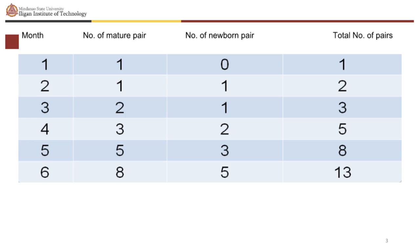The sequence of numbers 1, 1, 2, 3, 5, 8 is called a Fibonacci sequence. The Fibonacci sequence has a special rule: it is a series of numbers in which each number is the sum of the two preceding ones — 0, 1, 1, 2, 3, 5, 8, 13, 21, 34, 55. Therefore: 0+1=1, 1+1=2, 1+2=3, 2+3=5, 3+5=8, 5+8=13.